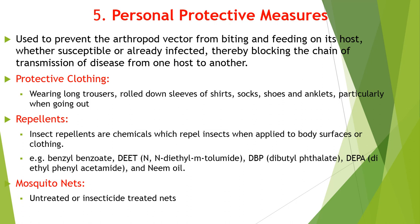Personal protective measures include: protective clothing such as wearing long trousers, rolling down sleeves of shirts, socks, and shoes — particularly when going outside the home. You can also use repellents, which are chemicals that repel insects when applied to the body surface or clothing — for example, benzyl benzoate, DEET (N,N-diethyl-meta-toluamide), etc. You might have used Odomos, which is a repellent. You can also use mosquito nets, which can be untreated or treated with insecticides.